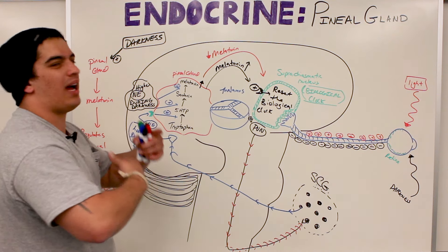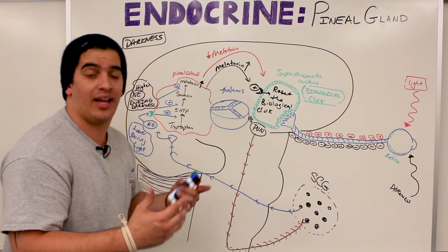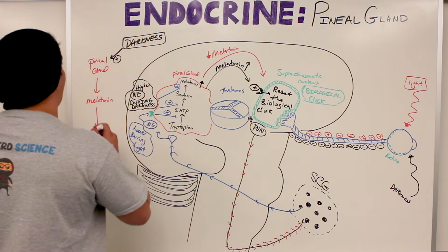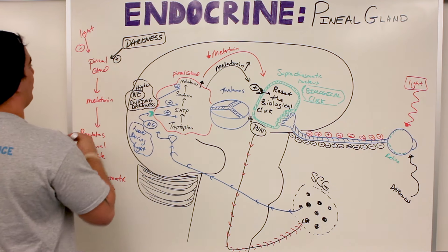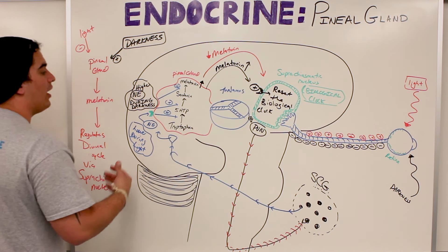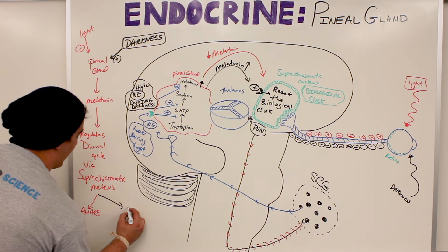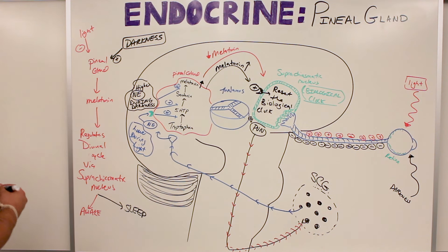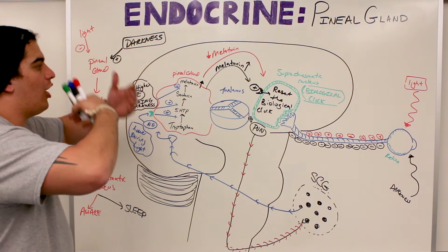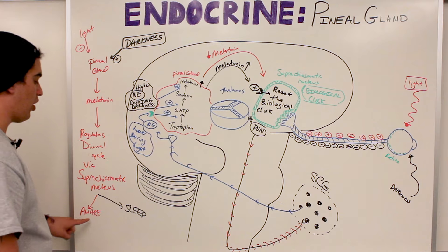Darkness works through different mechanisms to stimulate the pineal gland to release melatonin, and that melatonin regulates your sleep and wake cycles by acting on the suprachiasmatic nucleus — which resets our biological clock to help induce drowsiness and the sleeping process. In light, it inhibits the pineal gland, releases less melatonin, and keeps you awake. The pineal gland has indirect input from the visual pathway, helping to regulate sleep and wake cycles by activating or inhibiting the suprachiasmatic nucleus.